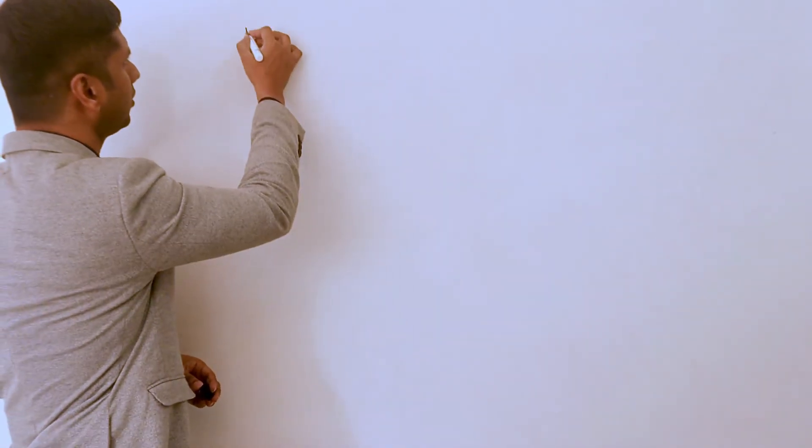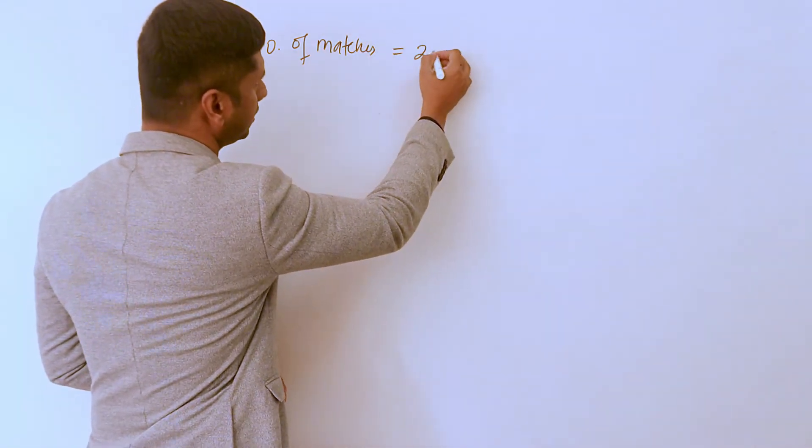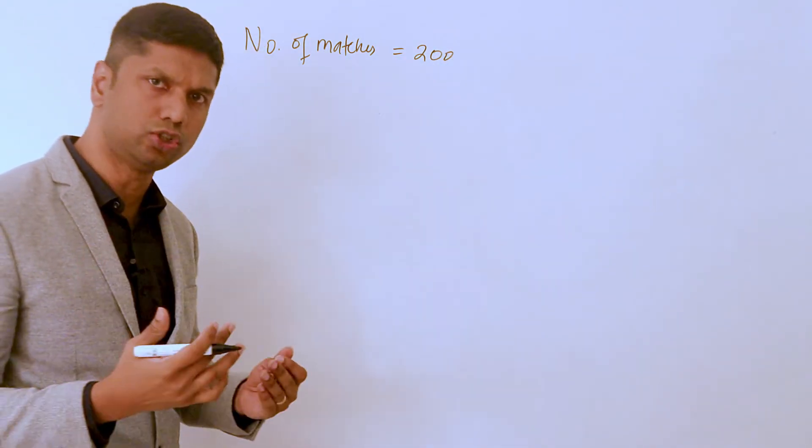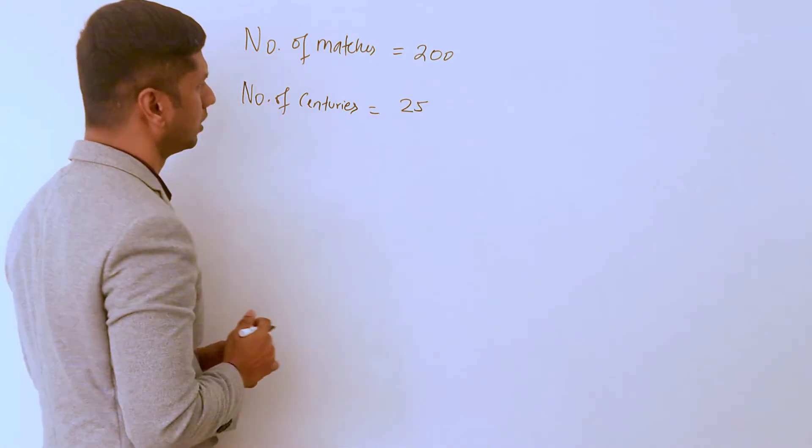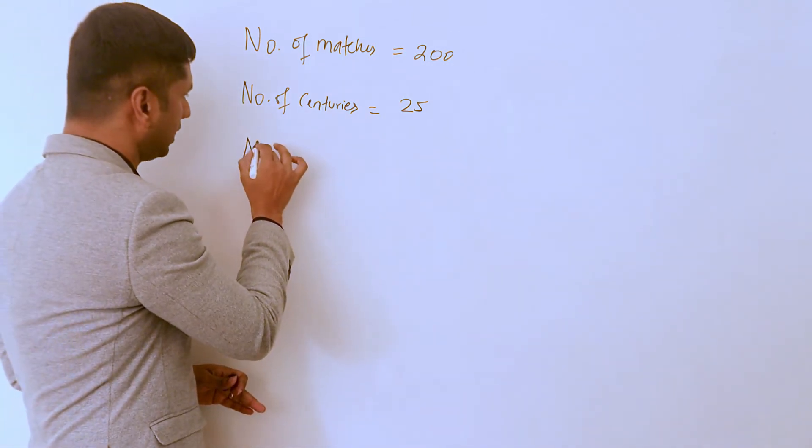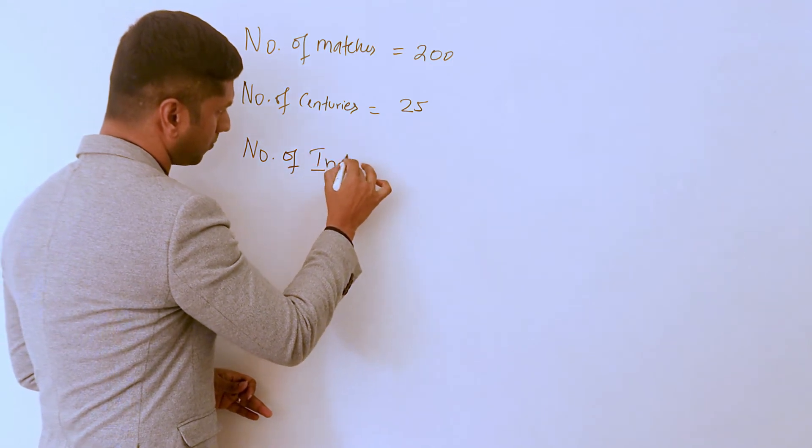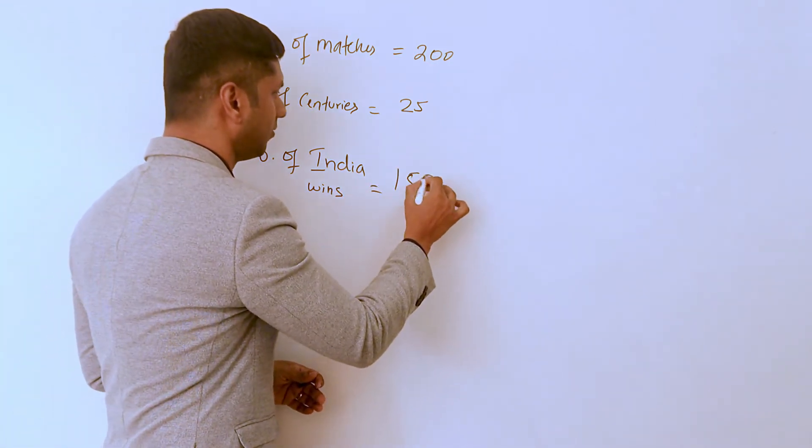When it comes to conditional probability, it's a simple concept. Let's say Rohit Sharma is playing - he's a great batsman who's scored three triple centuries. Let's say the number of matches Rohit has played is 200, he has scored 25 centuries, and India has won somewhere around 150 of these matches.